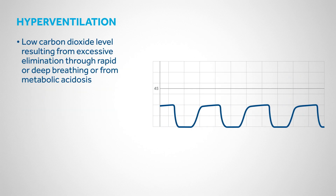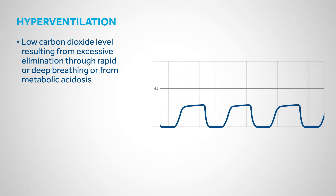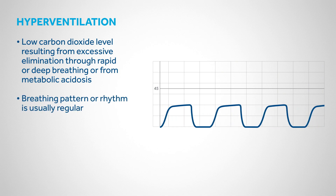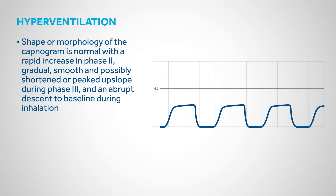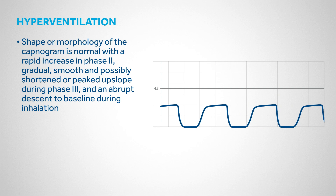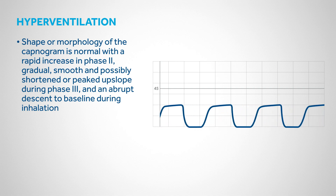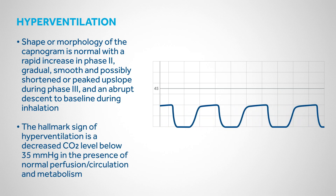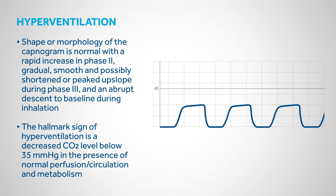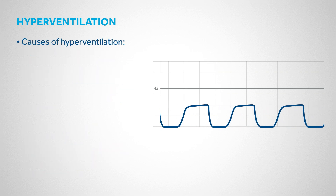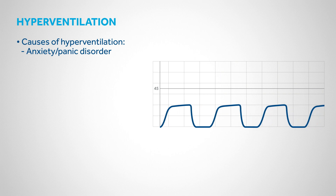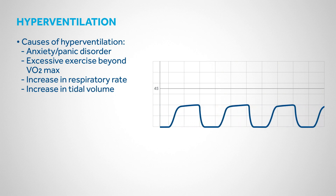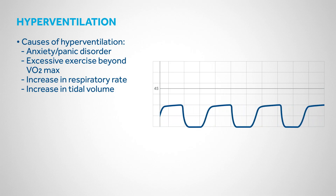Hyperventilation is defined as a low carbon dioxide level resulting from excessive elimination through rapid or deep breathing, or from metabolic acidosis. Respiratory rate may vary but is often increased, and the breathing pattern is usually regular. The capnogram morphology is normal with a rapid increase in Phase 2, gradual smooth and possibly shortened or peaked upslope during Phase 3, and abrupt descent to baseline during inhalation. The hallmark sign is CO2 below 35 mmHg in the presence of normal perfusion, circulation, and metabolism. Possible causes include anxiety or panic disorder, excessive exercise beyond VO2 max, increased respiratory rate, or increased tidal volume.